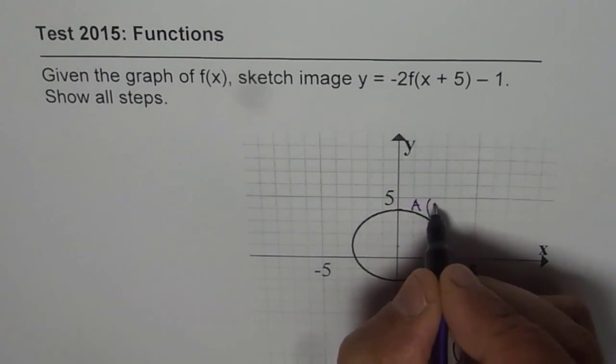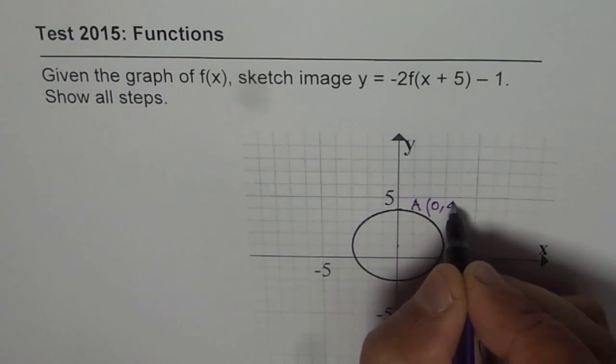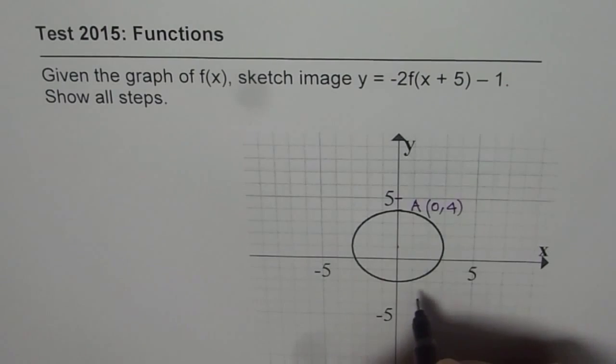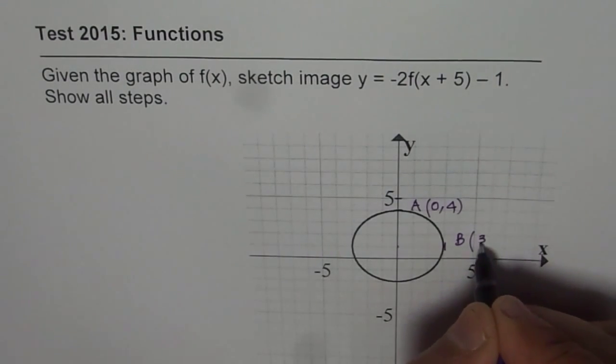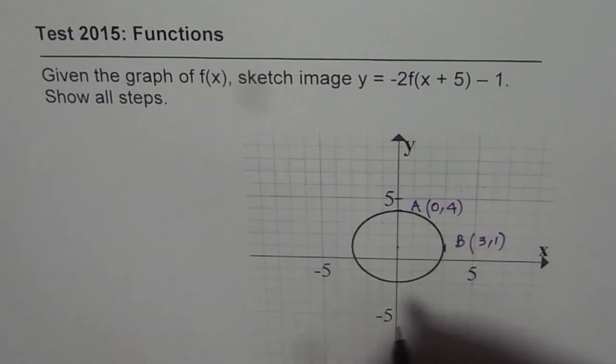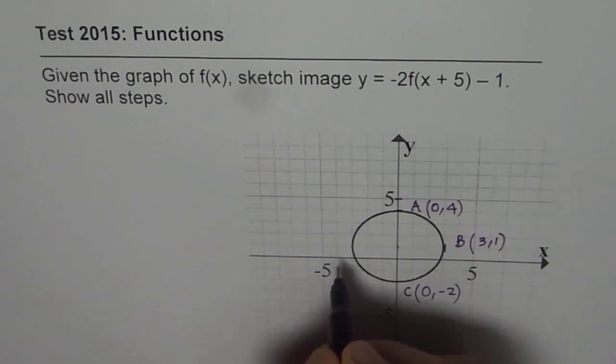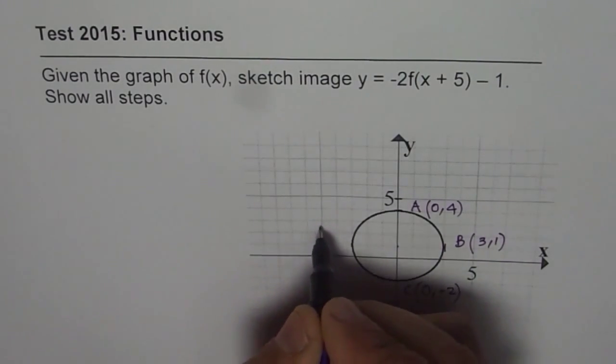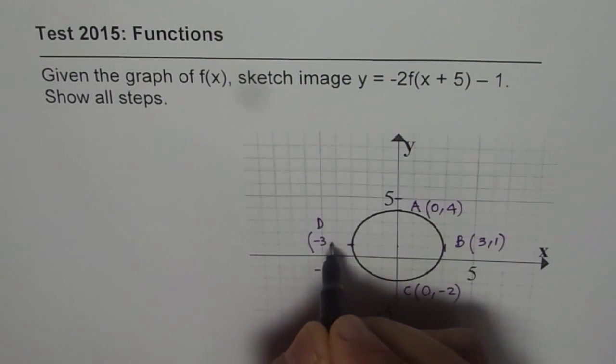And we know coordinates for point A are 0, 4. Let's say this is B, where the coordinates of point B are 3, 1. And then let me take this as C. The coordinates of point C are 0, minus 2. And then we'll take this as D.